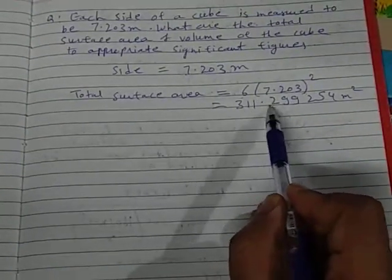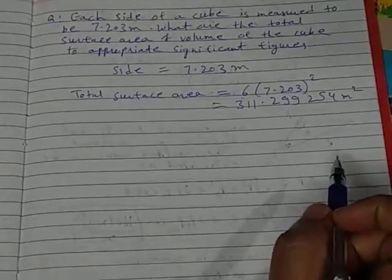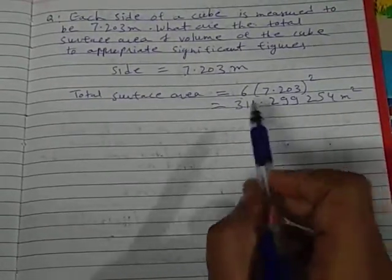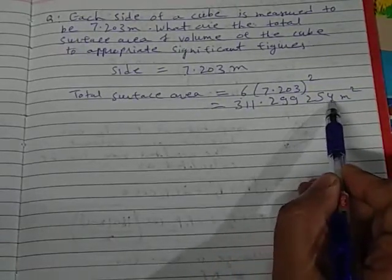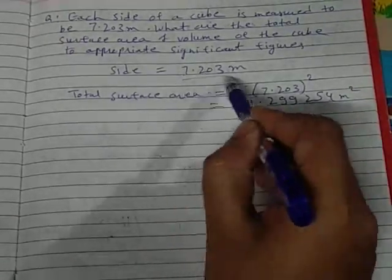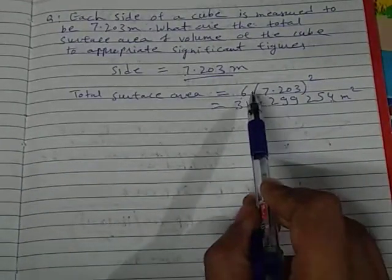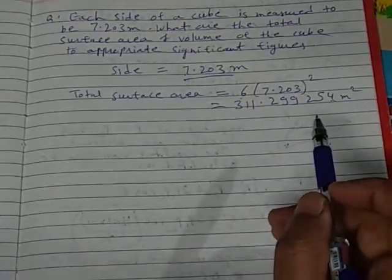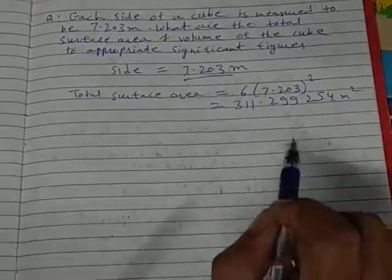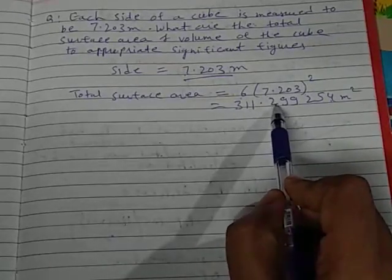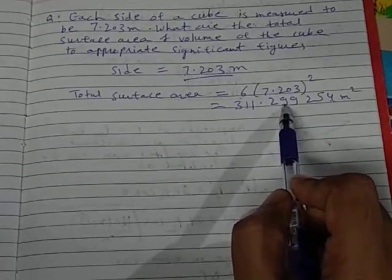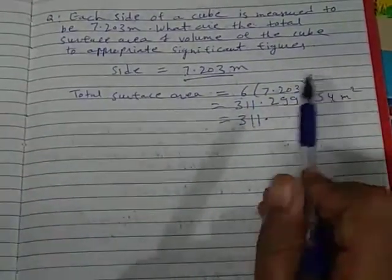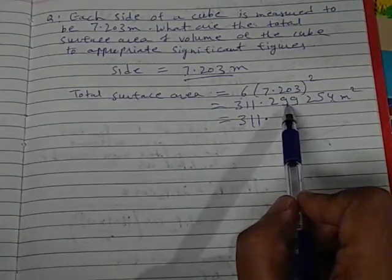When you solve this you get 311.299254 meter square. Now what should your answer be? In this result there are 9 significant figures, but your answer should come in 4 significant figures because this is the case of multiplication. In multiplication, you need the answer in the minimum number of significant figures. Since the side has 4 significant figures, your answer must also be in 4 significant figures — take 1, 2, 3, 4 digits: 311.2, but the next digit must be rounded off.